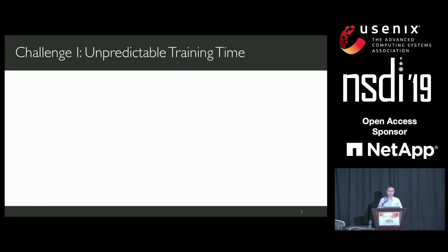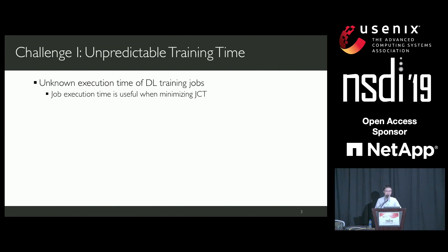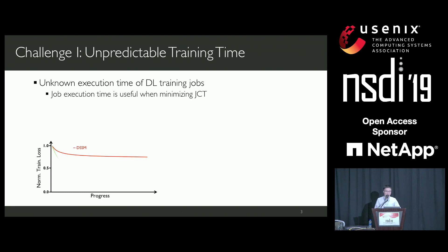The first challenge is the unpredictable training time of deep learning jobs. The exact execution time of deep learning jobs is often unknown before their completion. However, this information is very important when the scheduler is trying to minimize job completion time. For well-defined deep learning models, training loss curves are often smooth and easy to learn, so people can predict execution time based on the smooth loss curve and apply this information into the job scheduler.